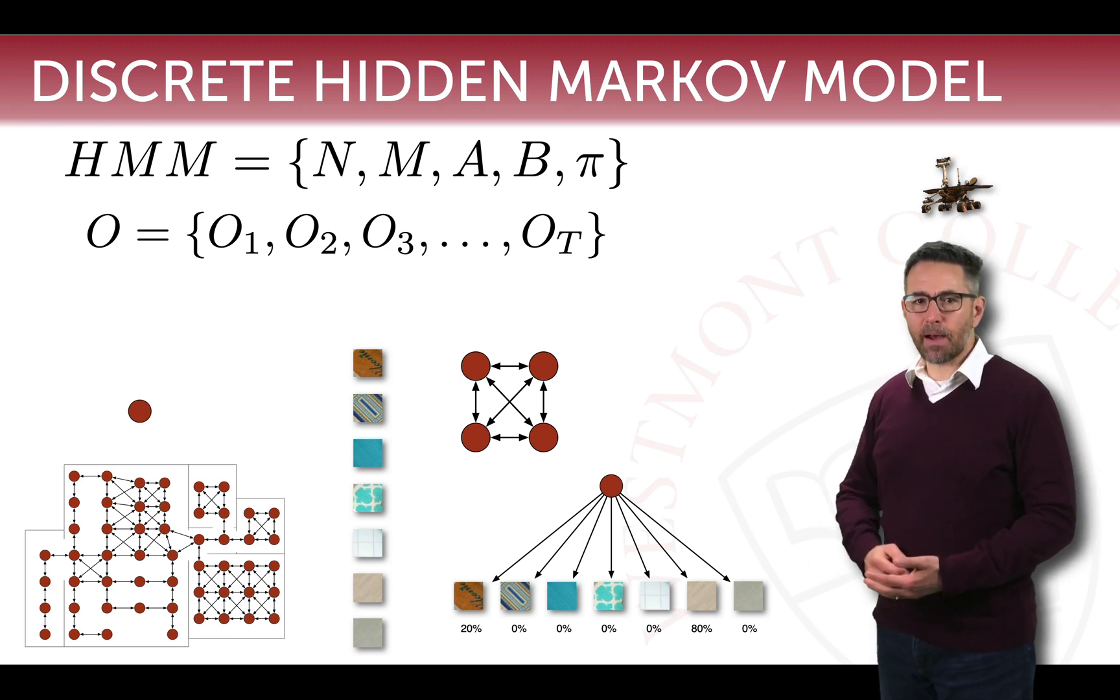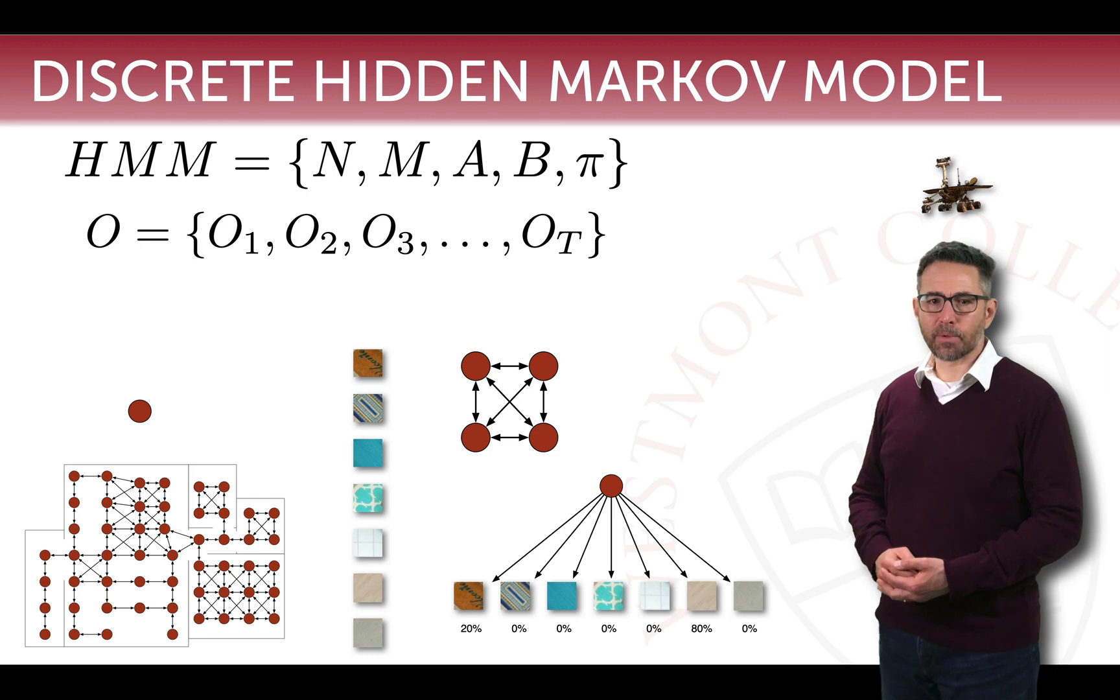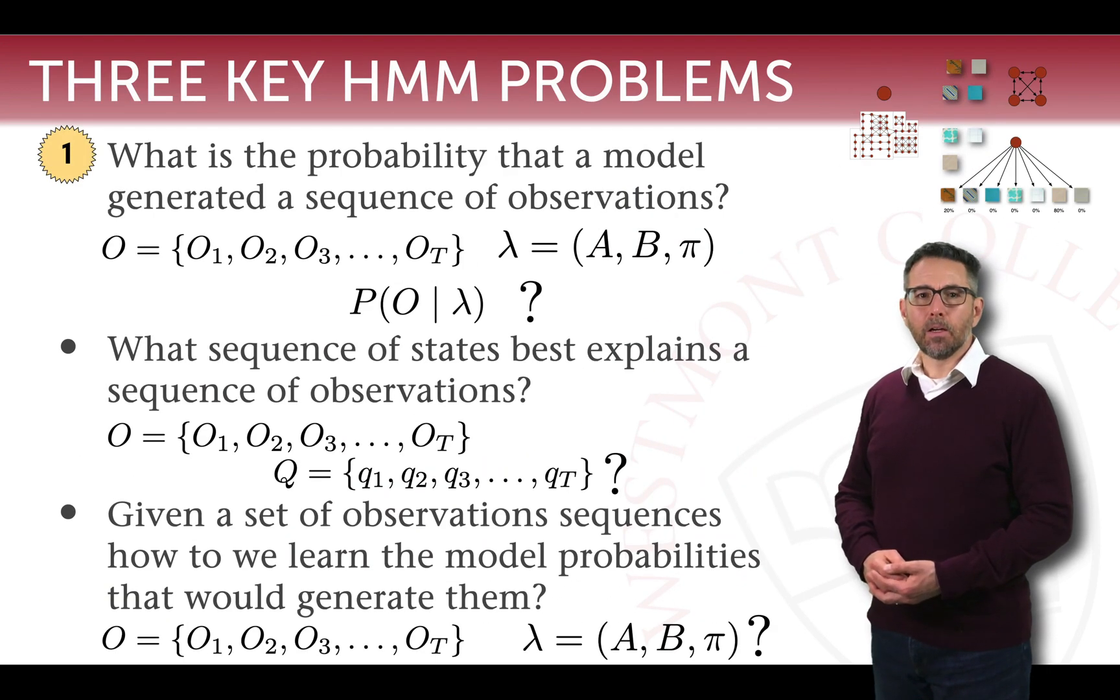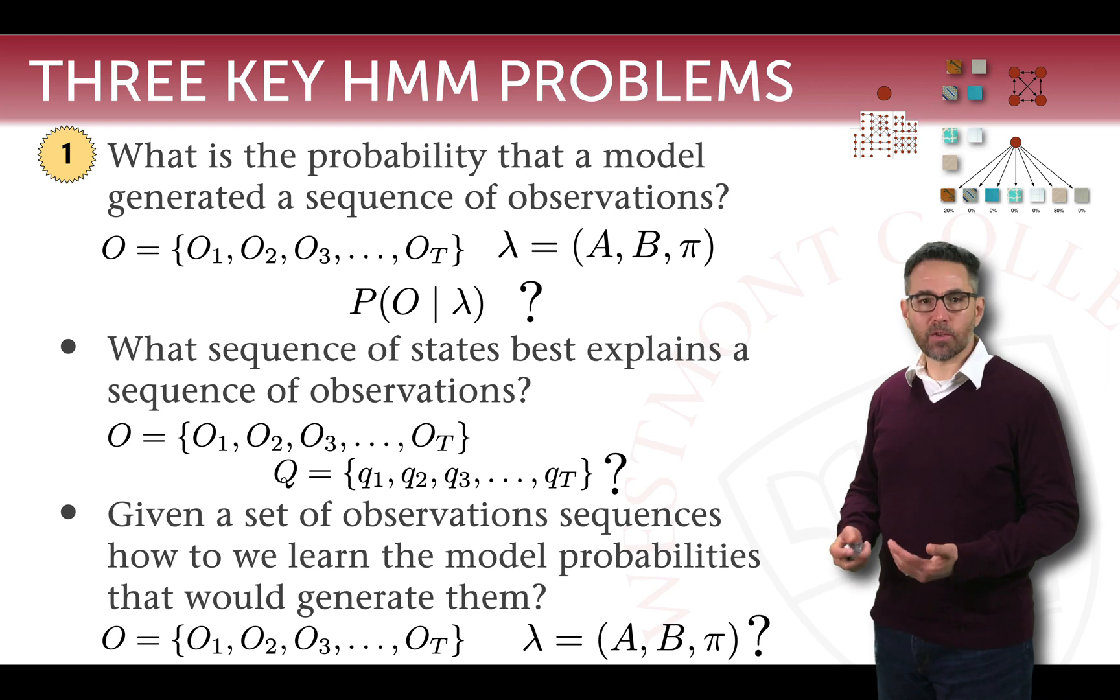When you're given a sequence of observations, for example this sequence O1, O2, O3, up to OT, there are a number of different questions that you might want to ask about your model as a result. Previously, what we looked at is the first question: what is the probability that a model would generate a sequence of observations?